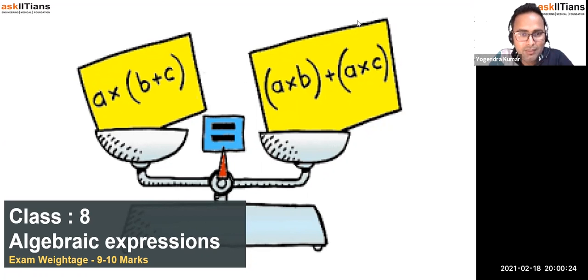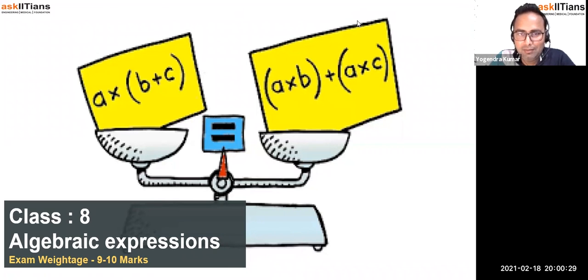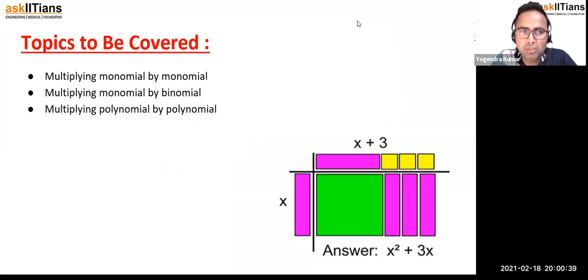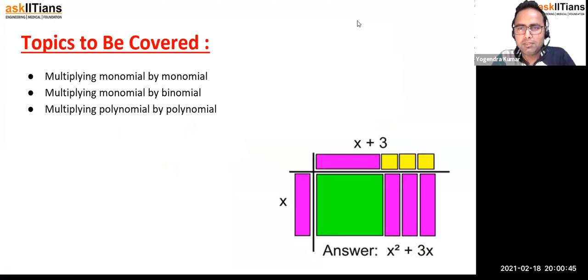That is what I'm going to explain. You need to pay attention and listen carefully — try to understand each and every term. So let's get started. We need to cover mainly: multiplication of monomial to monomial, multiplication of monomial to binomial, and multiplication of polynomial to polynomial. Pretty basic stuff.